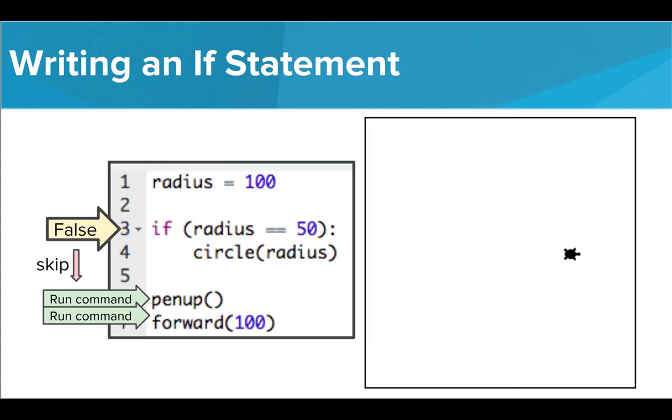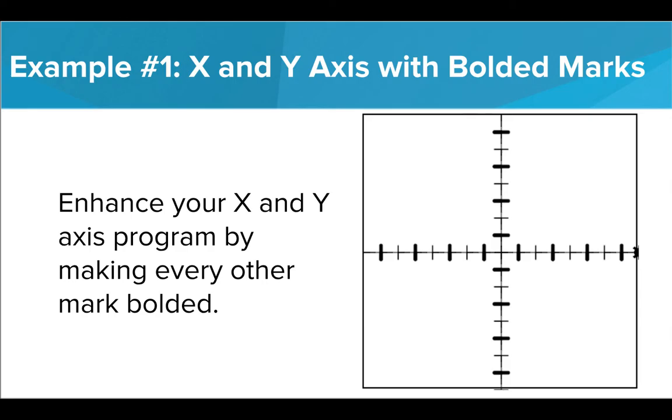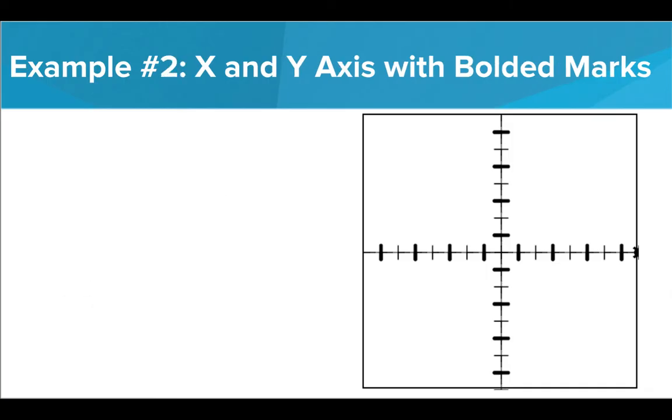Let's look at some Tracy programs that use if statements to complete specific challenges. This program is adding another upgrade to our x and y axis program by bolding every other hash mark on our axes. Now let's think of a way we can make this happen. We want every other mark to be bold, so that means we want marks 0, 2, 4, 6, etc. to be bold. What do these numbers have in common? They're all even.